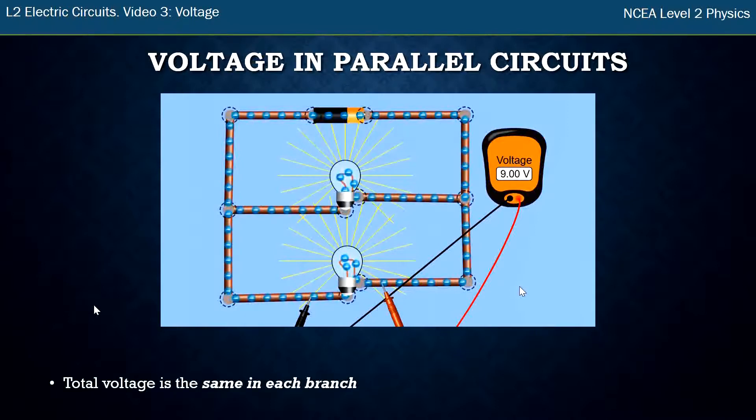So the rule for parallel circuits is that the total voltage is the same in each branch. We had nine volts in the battery, nine volts in one bulb, nine volts in the other bulb.